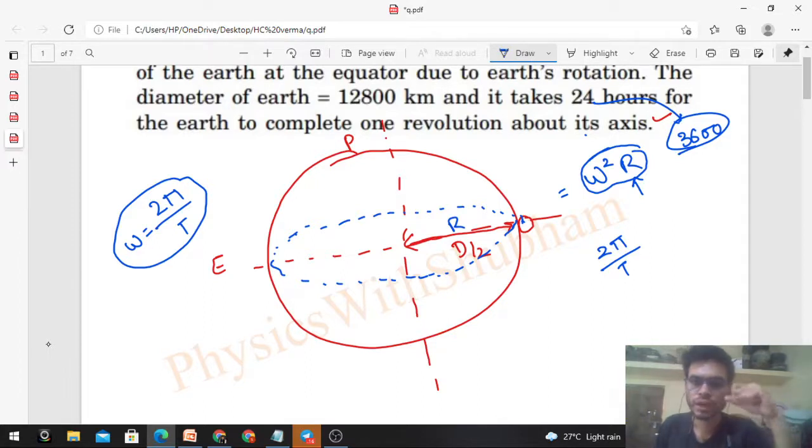So if we want to find the acceleration of a particle which is not at the equatorial position - not at the equatorial position, but at any position on earth's surface - let's assume it is at some angle theta, placed at some angle theta on earth's surface.